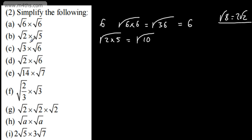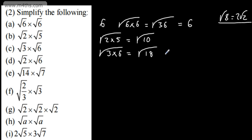With this one, we've got the root of 3 multiplied by the root of 6. This would give me the root of 3 multiplied by 6, which gives me the root of 18. I could rewrite this as the root of 9 multiplied by the root of 2, as 9 goes into 18, which we could write as 3 root 2. If that doesn't make sense, do go back and check the previous video.